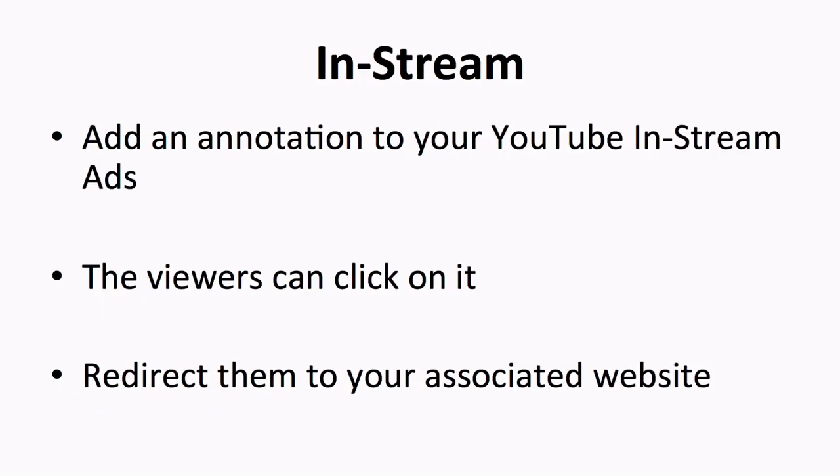The next method that allows you to build your list from your YouTube channel is by editing the annotation on your YouTube in-stream ads. You can tweak some links here to direct your viewers to your homepage or squeeze page. For the display URL, type in your homepage or associated website. This will create a link in your in-stream ad which viewers can click on. In the final or destination URL, insert the URL of your associated website or squeeze page. When viewers click on the link, they will be directed to your associated website or squeeze page. To set up the annotation on your in-stream ads, go to the settings for your in-stream section, type in the relevant URLs, then scroll to the bottom of the page and hit the save button.